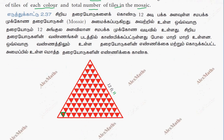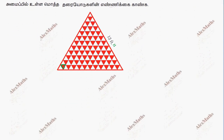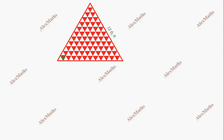Now, counting the number of white tiles. The white tile count goes: 1, 2, 3, 4, 5, 6, 7, 8, 9, 10, 11, 12.